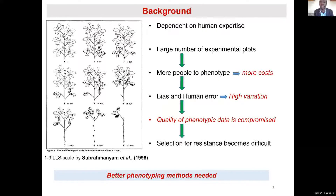When breeding populations are large, the number of experimental plots are many and therefore there is need to phenotype these populations faster. More people are usually hired to do this phenotyping, which increases the costs of breeding. There is lots of human error and high variation among the people collecting the data, compromising the quality of phenotypic data and making selection for resistance difficult. High quality phenotypic data is needed for accurate selection in breeding.